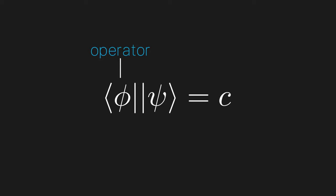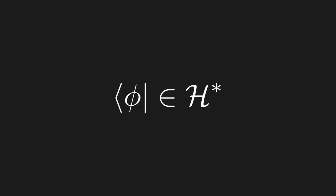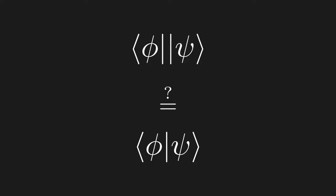As we stated before, these bras live in the Hilbert dual space. That being said, you may be noticing something. When we put a bra and ket together to get a number, it looks suspiciously like an inner product in this notation, yet we have made zero mention of the inner product. So what's going on?